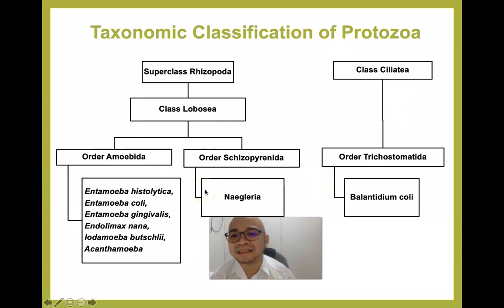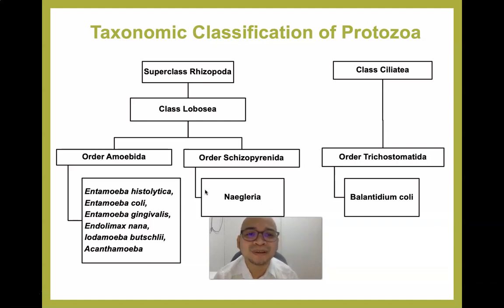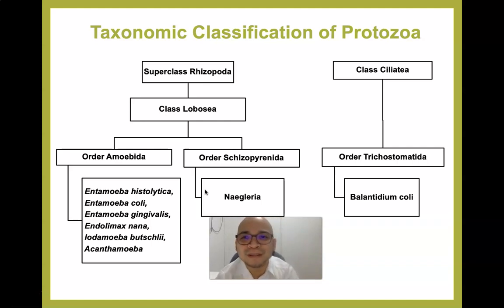Under class Ciliatea we have the order Trichostomatida, and under that is Balantidium coli. As a trivia, Balantidium coli is considered the largest intestinal protozoan.